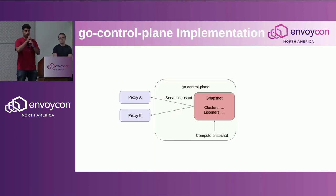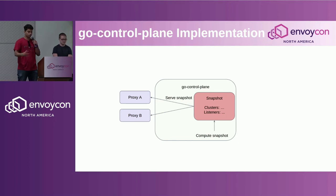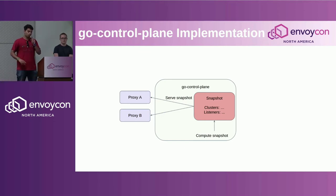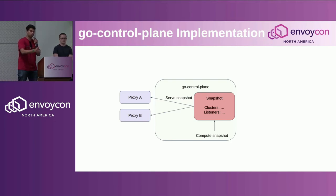Go Control Plane works by having users provide a snapshot of all resources that proxies need. The computation of the snapshot and the serving of the snapshot are completely decoupled. This makes it easy to support both state-of-the-world and Delta XDS — for Delta, you store the old snapshot, diff it against the new snapshot, and the diff becomes the deltas sent to proxies.